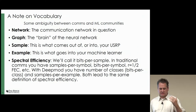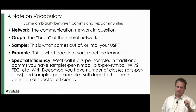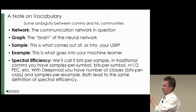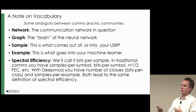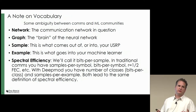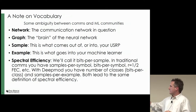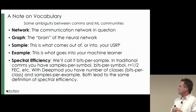A quick note on vocabulary — two completely different communities use the same words for totally different things, which is very frustrating. A 'network' here means a communication network: at least two nodes talking to each other. I'm going to use the word 'graph' for the neural network or machine learning brain. A 'sample' is what comes into or leaves your USRP, and an 'example' is what goes into your machine learning block.